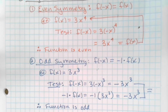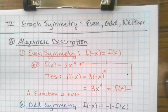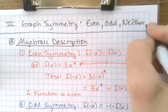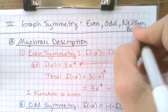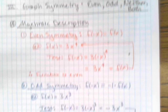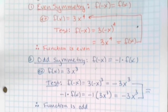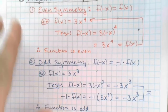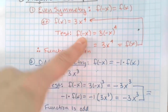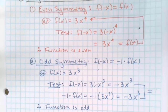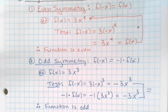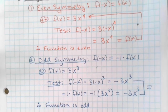Even, odd, neither — there's one more category. You can have a function that is both, but it's very, very rare. Typically, we test for even symmetry first because that gives us our f of negative x, and then we just use it to test for odd. It could also be neither — neither one could work out. You determine even and odd status using algebra.